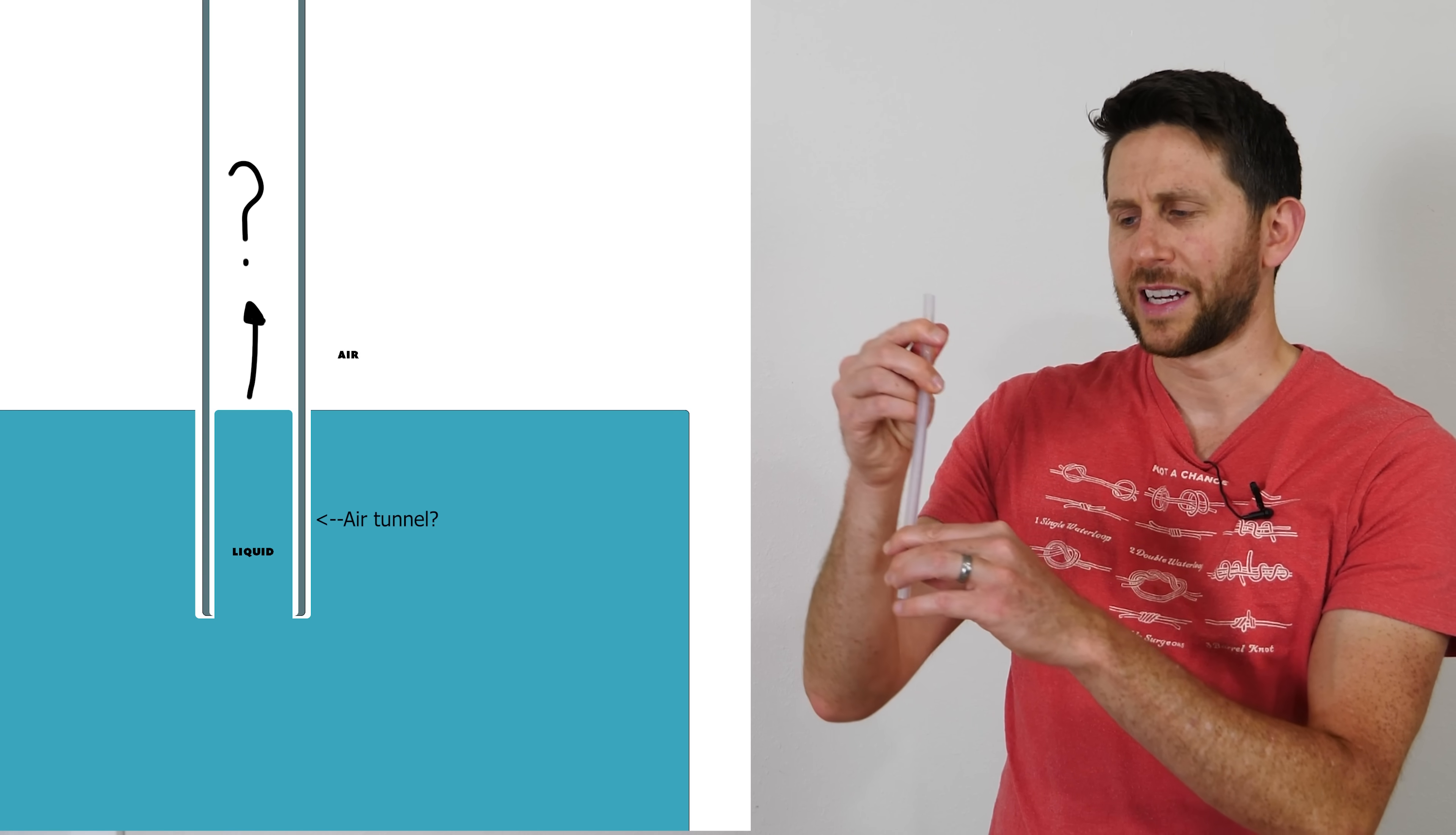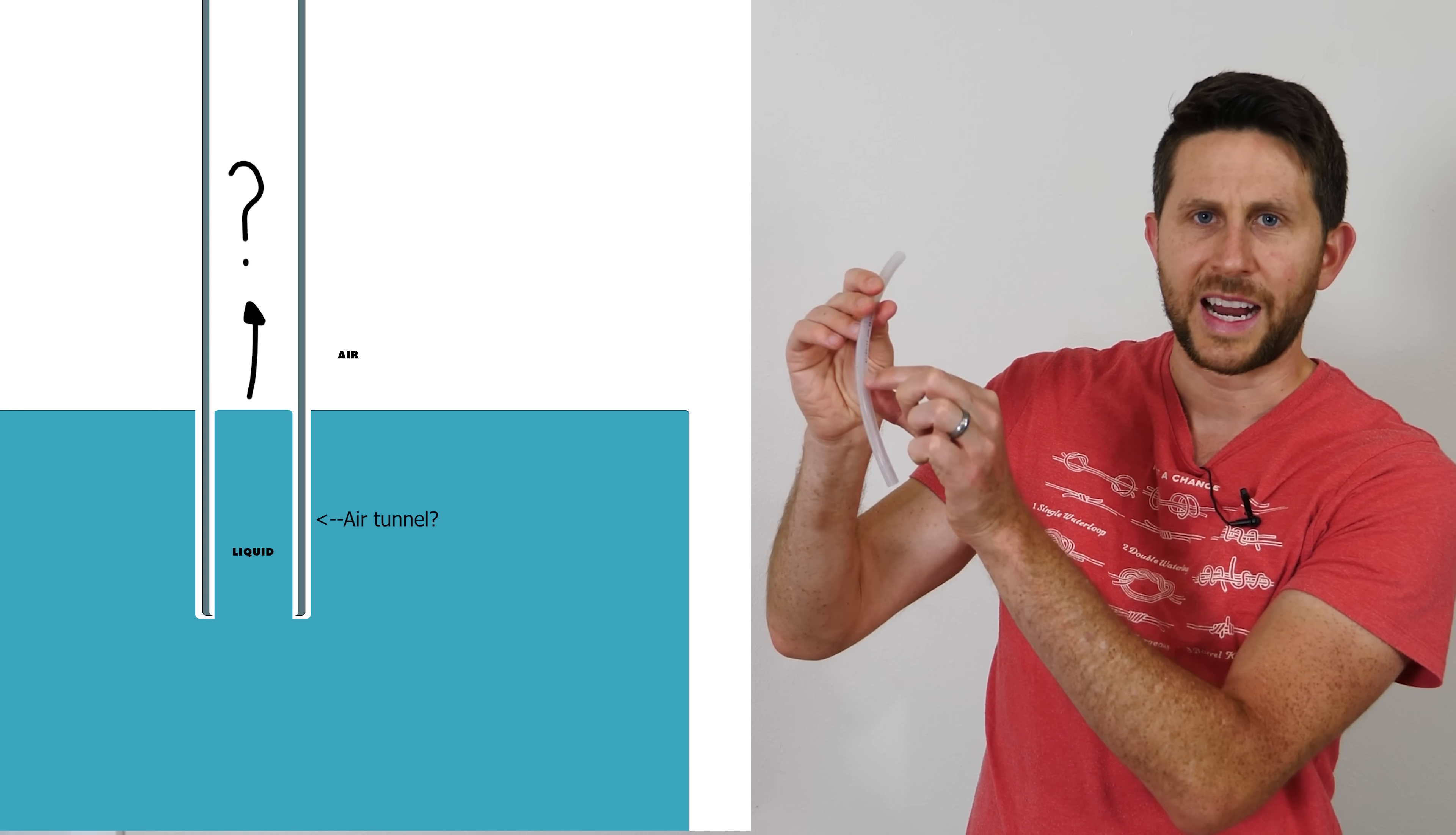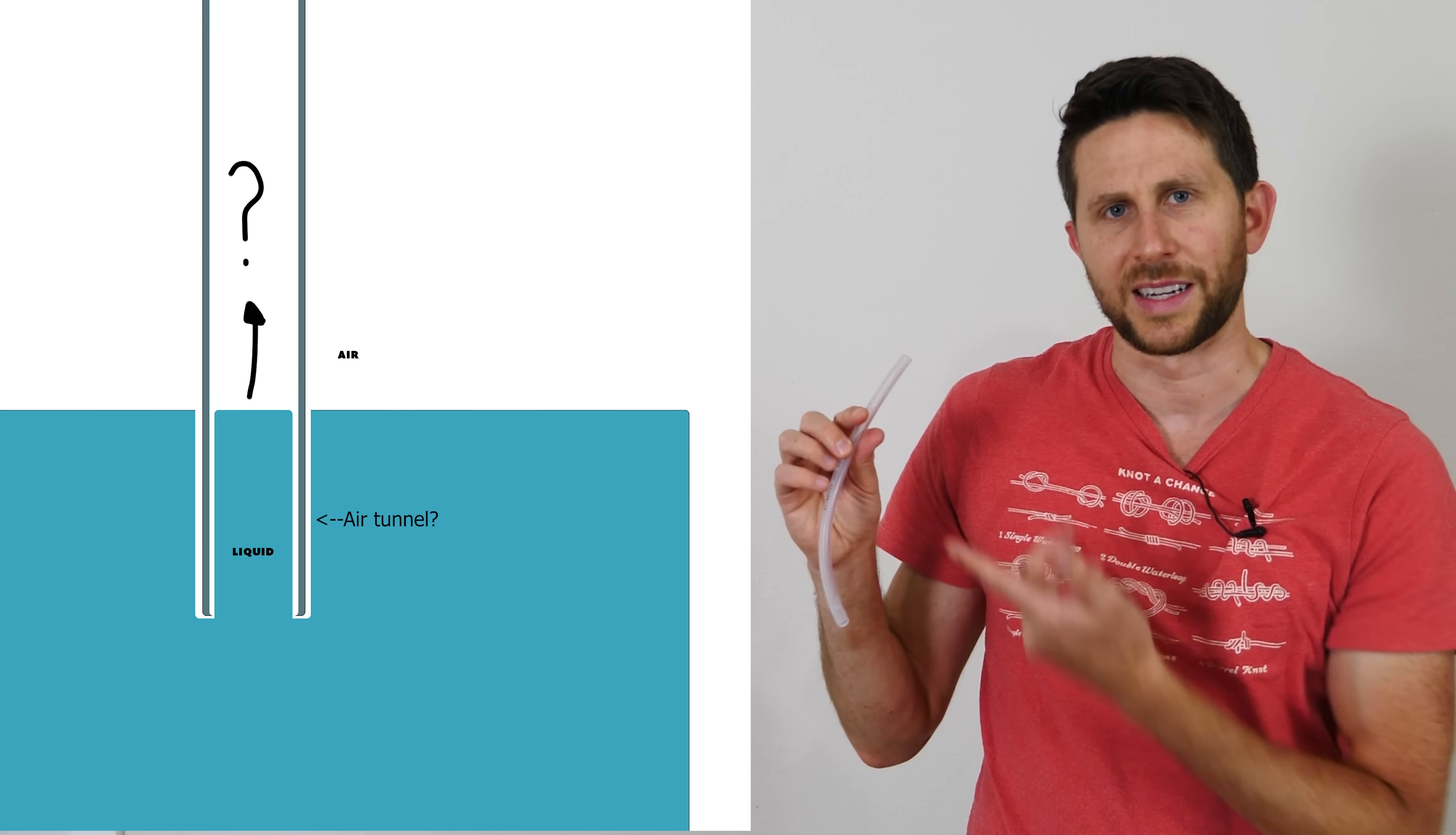So that got me thinking, what if I made a hydrophobic straw, would I actually be able to suck up water with it? Because if you think about it, the way a straw works is you have to create a vacuum in the top of it, but if there's an air layer around the liquid inside of it, will it just suck up air into your mouth and you won't be able to create a vacuum to suck it up?